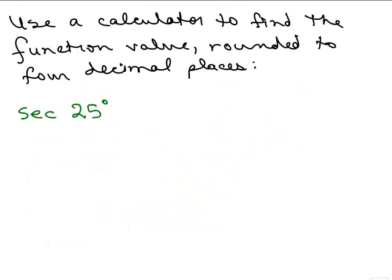We're going to use a calculator to find the function value rounded to four decimal places. Secant of 25 degrees. Our angle's in degrees, so first of all, we want to make sure that our calculator is in degree mode. But there is no secant function on most calculators or any calculator I've ever seen. So we have to know that the secant is the same thing as the reciprocal of the cosine.